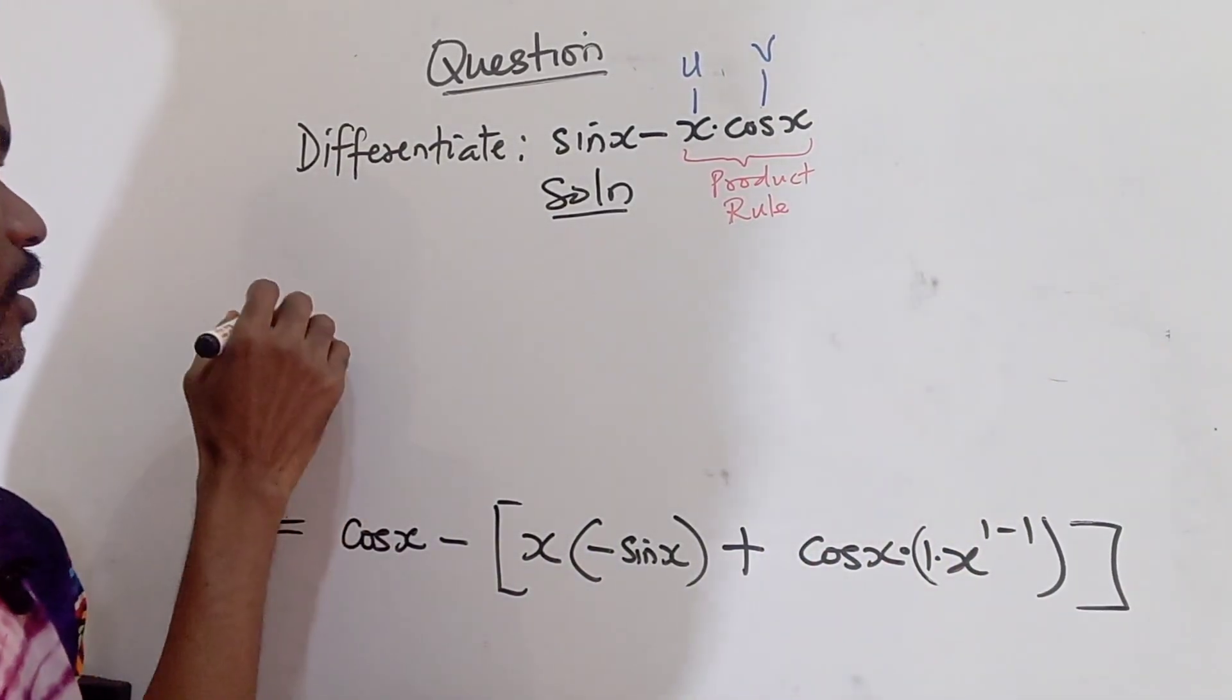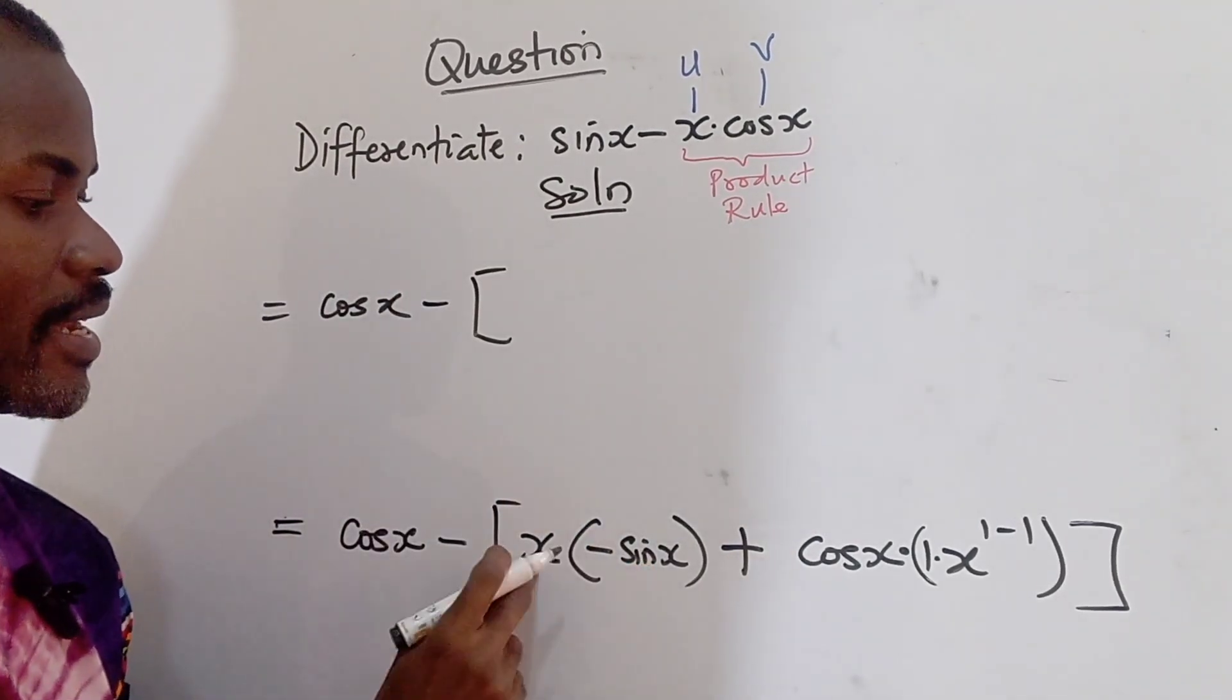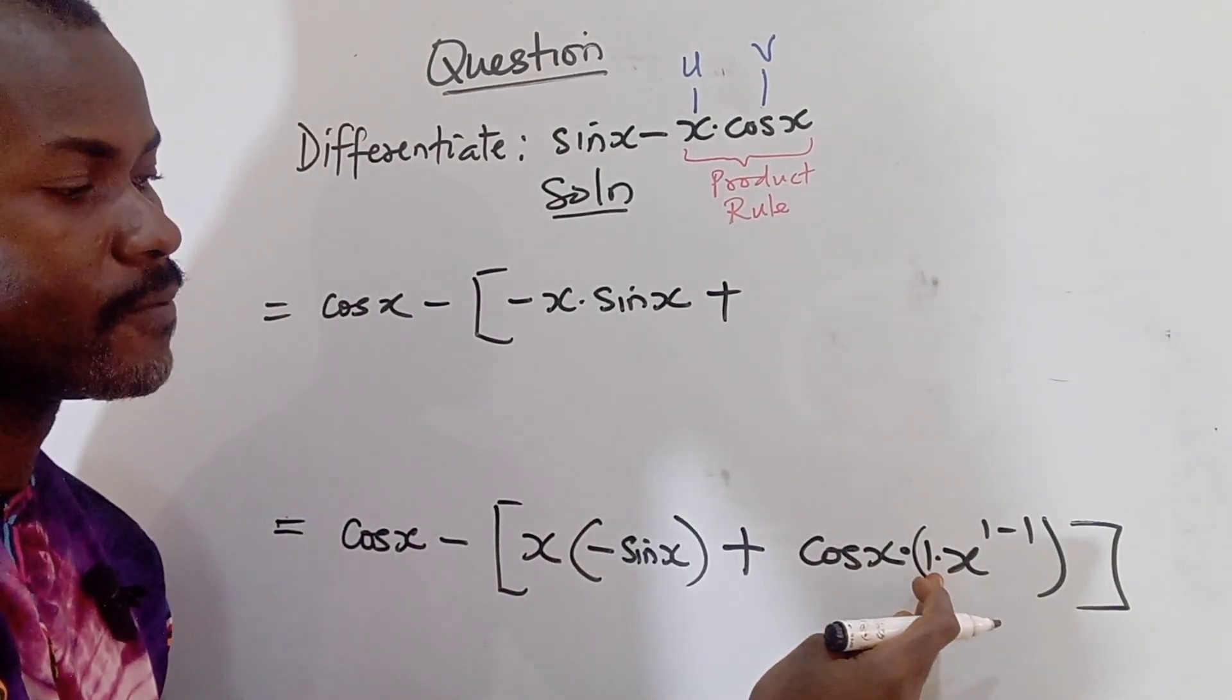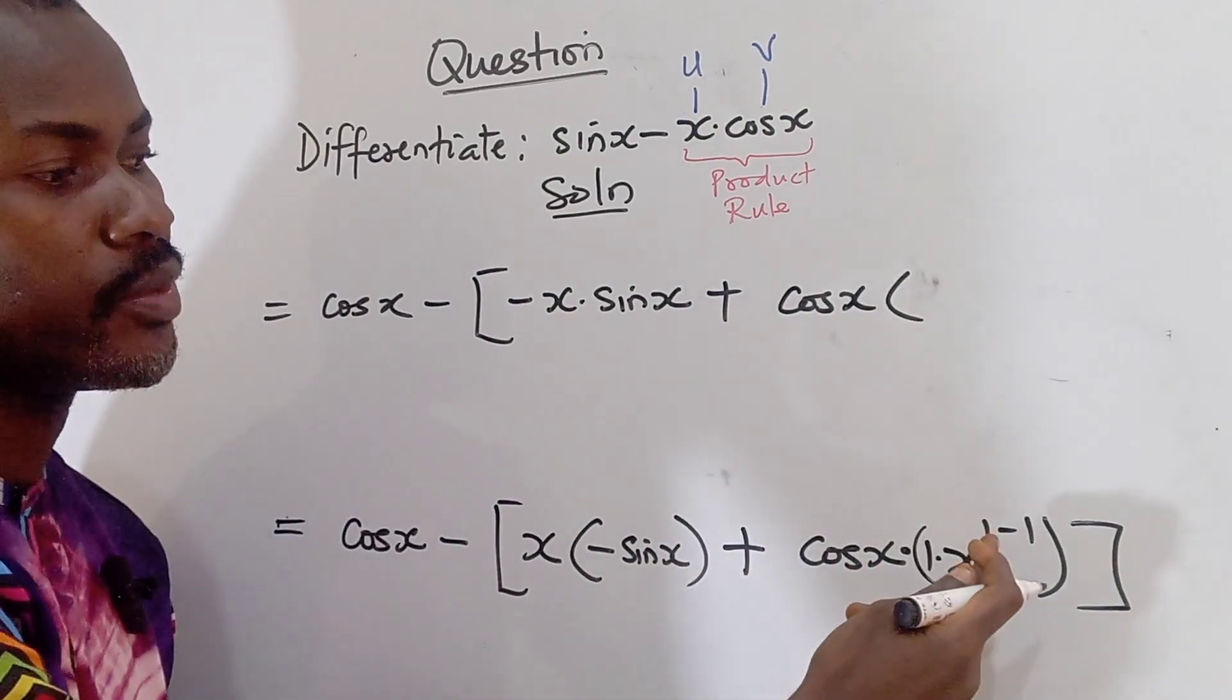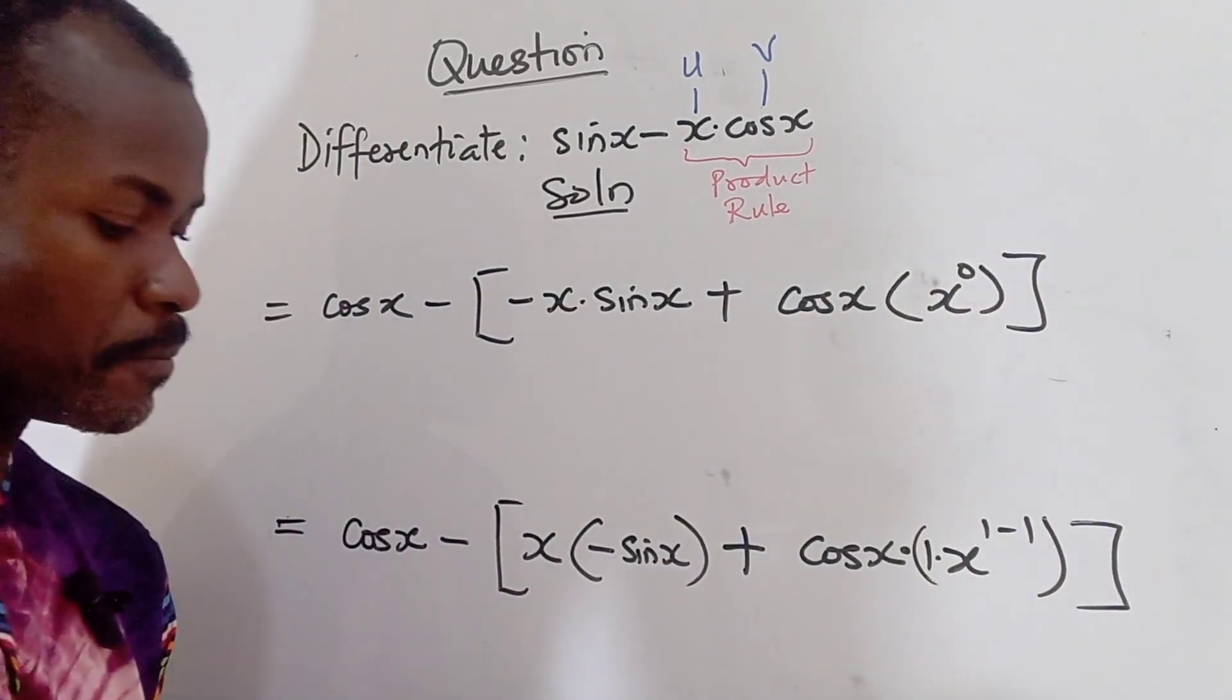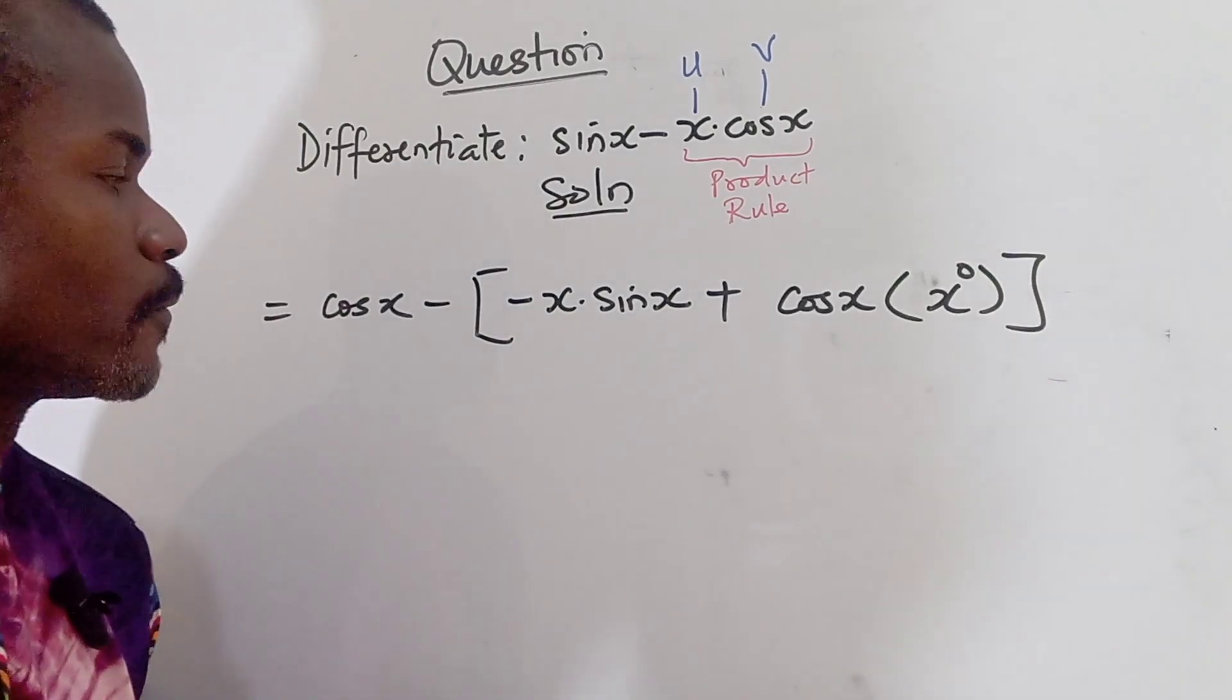See what we are going to get. So this is going to give us cos x minus, now for this part, x times this is going to give us minus x sine x. All right, plus. So we have cos x multiply. 1 minus 1 is 0. 1 times x raised to the power 0. So we have x raised to the power of 0. So all this simplifies to give us x raised to the power of 0.